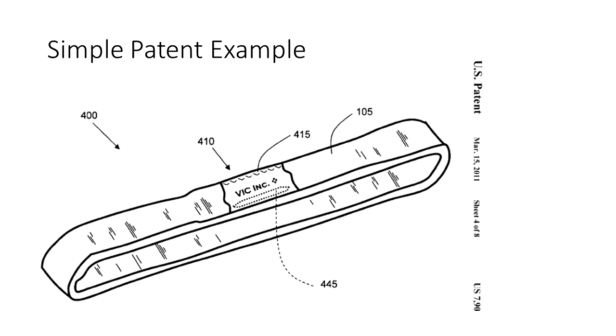So basically here it is. It's an elastic band shown here as 105 and it has a label on it shown as 410. So that's really basic but there is a little more to it. The label is stitched at the top indicated as 415 and the label is not attached to the elastic band at the bottom but it has an internal weight indicated at 445.